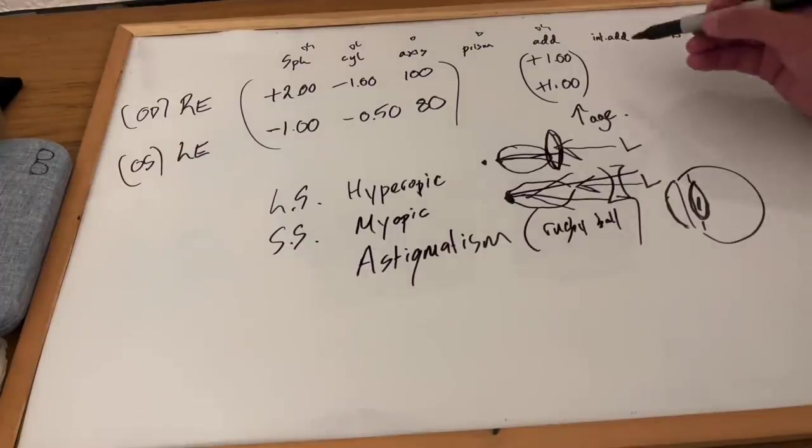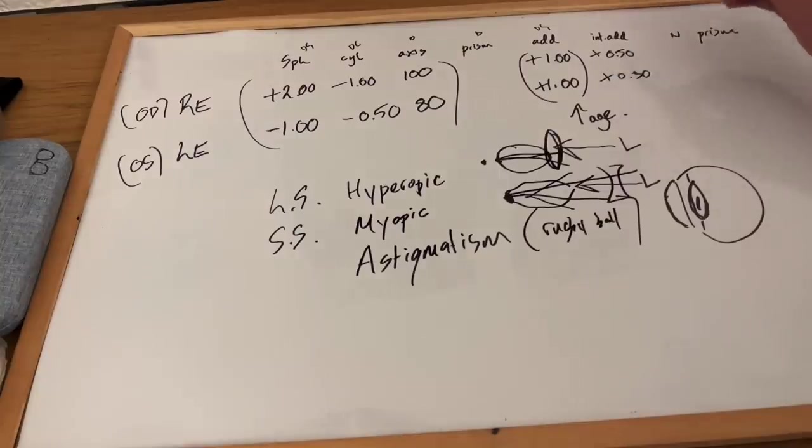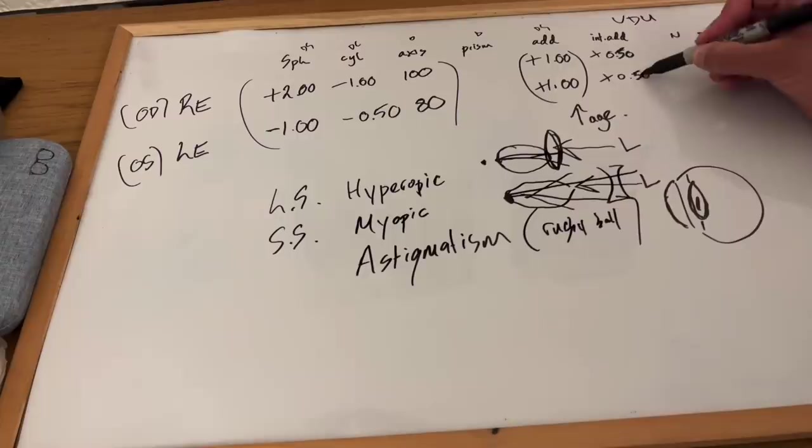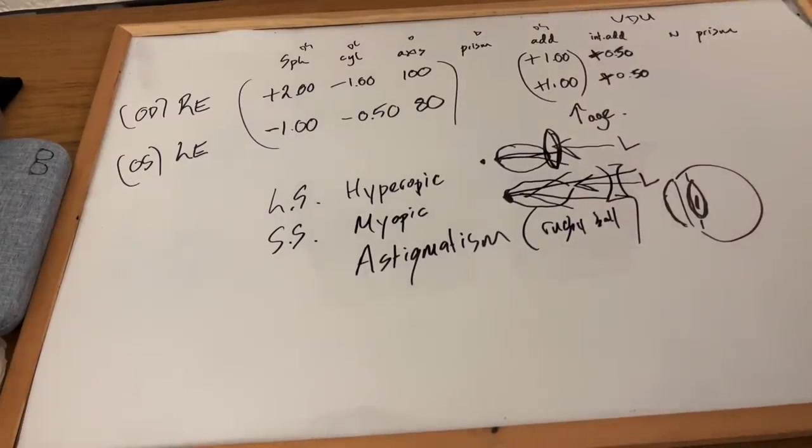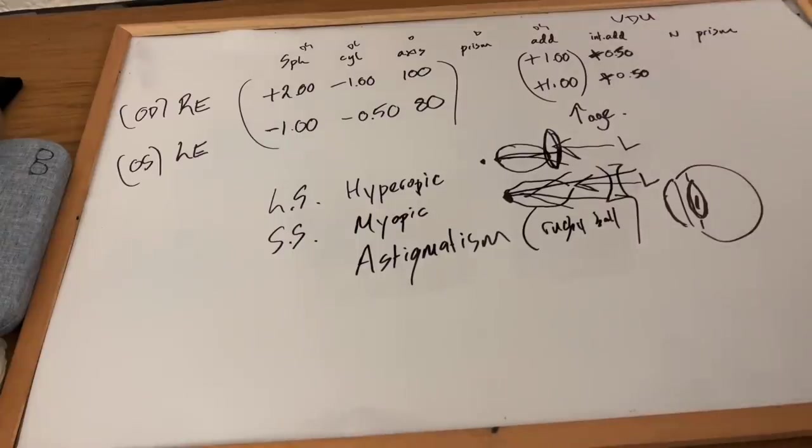So that should focus your near vision. And you may have been prescribed an intermediate add for those tasks you perform at an intermediate distance, which is the VDU. So the optometrist should measure your working distance and calculate and demonstrate what lenses are going to best focus your intermediate there. The symbol is always plus with your add and intermediate adds there.